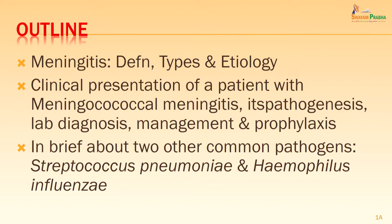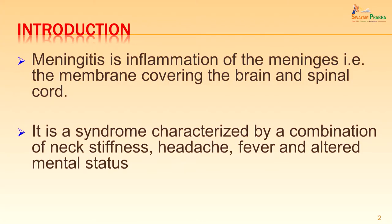In brief, two other common pathogens — Streptococcus pneumoniae and Haemophilus influenzae — will be discussed as these are also common causative agents of meningitis. Meningitis is inflammation of the meninges, the membrane covering the brain and spinal cord. Bacteria get entry into the subarachnoid space, multiply there and cause inflammation. It is a syndrome characterized by a combination of neck stiffness, headache, fever and altered mental state.